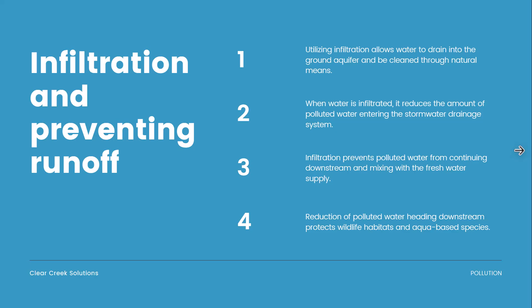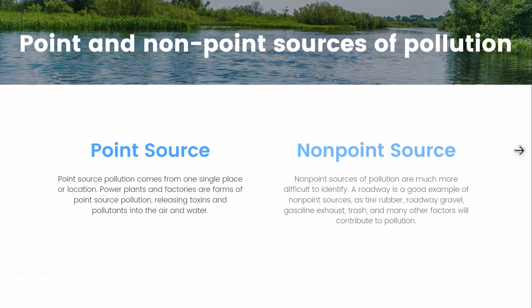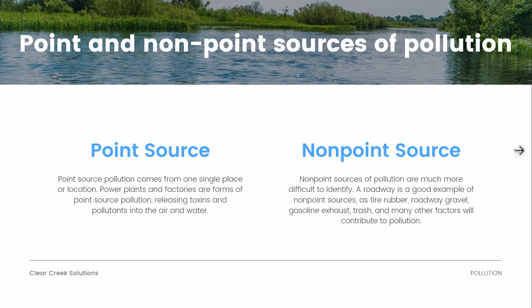Infiltration prevents polluted water from continuing downstream and mixing with the freshwater supply. When it infiltrates into the ground, it gets clean, it reduces the amount of polluted water, and it keeps those toxins from reaching freshwater sources. The reduction of polluted water heading downstream also protects wildlife habitats and aquatic-based species — so not just the water supply, but animals downstream will benefit from infiltration as well.